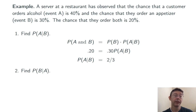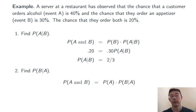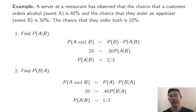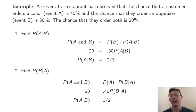Let's also compute the probability of B given A — the probability that they order an appetizer given that we know they've ordered alcohol. Using the same formula but swapping the roles of A and B: P(A and B) = P(A) × P(B|A). We know P(A and B) is 0.2 and P(A) is 0.4. Dividing both sides by 0.4, we get P(B|A) equals one-half. Notice that these two conditional probabilities are different. In general, P(A|B) and P(B|A) should be different.